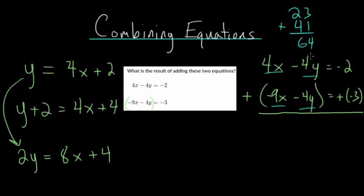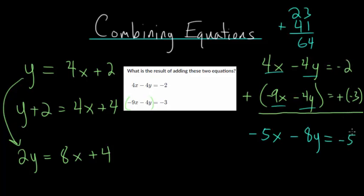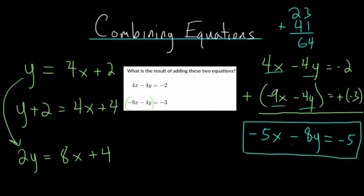Kind of like normal addition with regular numbers in columns, you would just add straight down. So we'll do that here. We have 4x plus negative 9x — essentially 4x minus 9x — which would be minus 5x. Here we have minus 4y plus negative 4y, or minus 4y minus 4y, which would be minus 8y. And here we have minus 2 plus negative 3, which is minus 2 minus 3, which would be negative 5. So when we add these two equations together, it simplifies to this new equation.